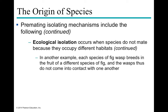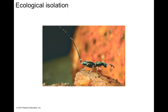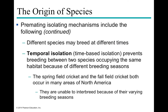Another example of ecological isolation is fig wasps. Fig wasps always go back to breed at the same type of tree from which they were born. If they were bred in one type of fig, they return to that type, while a different species breeds in a different type of fig. So the wasps never come into contact with one another because they breed in the fruit of different species of figs.